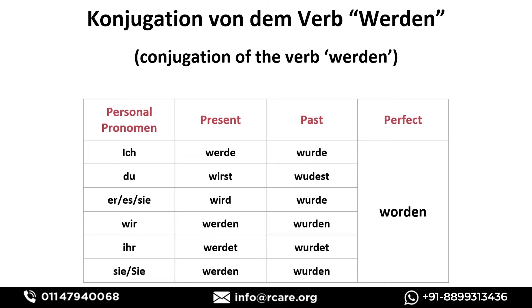Now let's move to the past tense conjugation of 'werden': ich wurde, du wurdest, er/sie/es wurde, wir wurden, ihr wurdet, sie/Sie wurden.